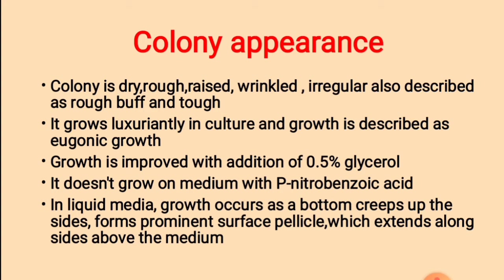Colony appearance: Mycobacterium tuberculosis forms colonies that are dry, rough, raised, wrinkled, and irregular — also described as rough, buff, and tough appearance. It grows luxuriantly in culture and growth is described as eugonic growth, meaning luxuriant or sufficient growth. Growth is improved with addition of 0.5% glycerol. It does not grow on medium with para-nitrobenzoic acid.